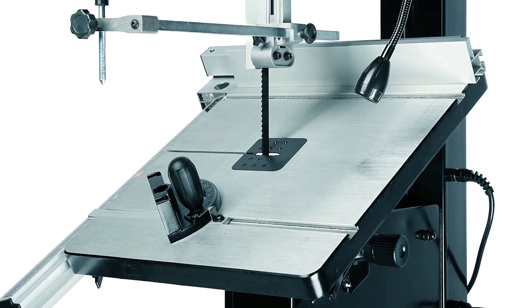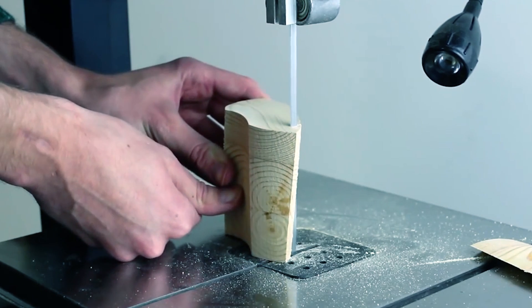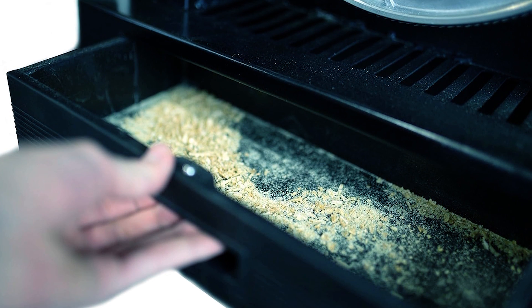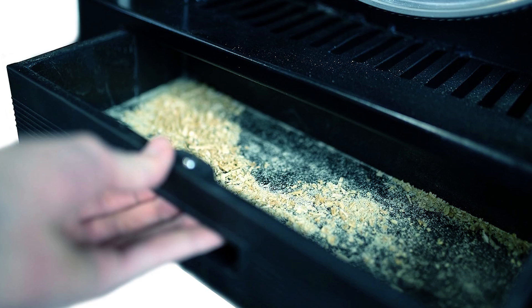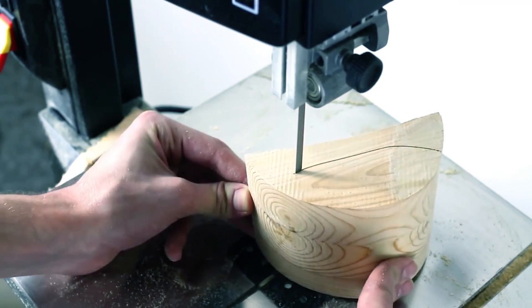The cast aluminum work table bevels up to 45 degrees, facilitating angled cuts, while features like a flexible work light, 3-in-1 dust port, and various accessories enhance functionality. Backed by a two-year warranty, it's a dependable choice for woodworking enthusiasts.